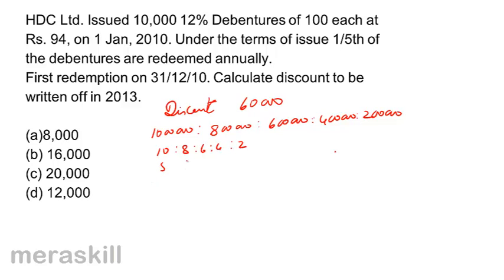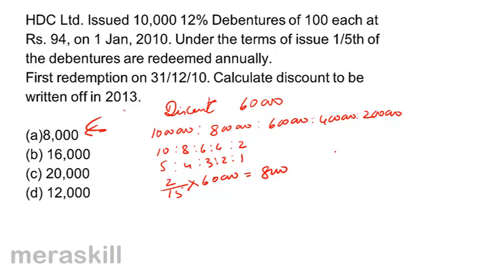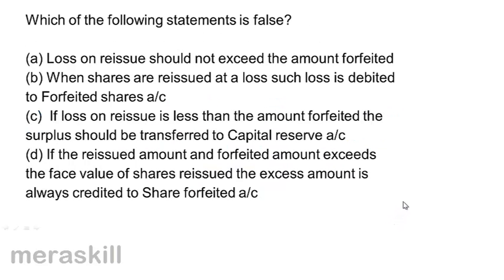The ratio simplifies to 5:4:3:2:1, with a total of 15 parts. Therefore, the amount of discount in the fourth year (2013) will be 2/15 of 60,000, which equals 8,000. The correct answer is A, 8,000.